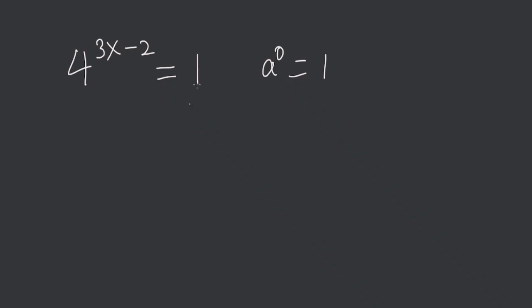So if I have 4 to the 0 is the same thing as 1. So 4 to the 3x minus 2 is equal to 4 to the 0. These two are equivalent.